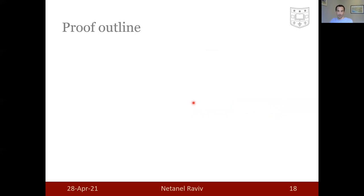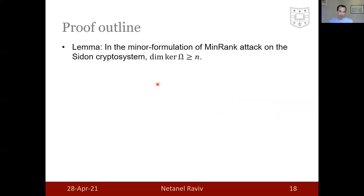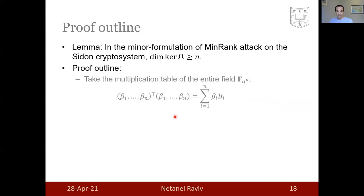A few words about the proof outline. What we prove is that in the minor formulation of min rank, there are at least n linearly independent vectors in the kernel of omega. What we do in the proof is that we take the multiplication table of the entire secret field, F_q^n, which gives rise to these matrices B_i. In some sources in the literature, this is called the multiplication tensor of the field. And after some change of basis, we show that some vectorization of B_i is in the kernel of omega.